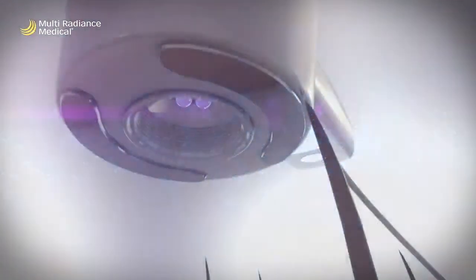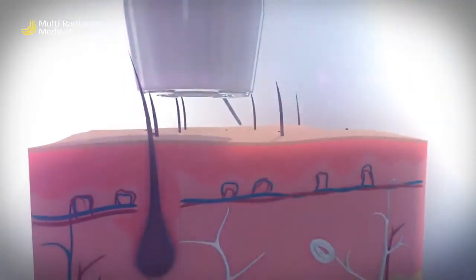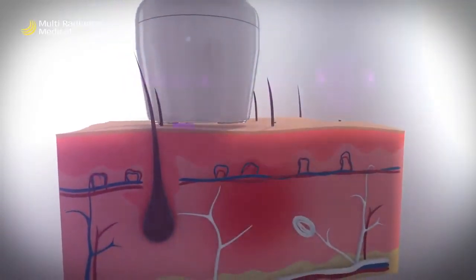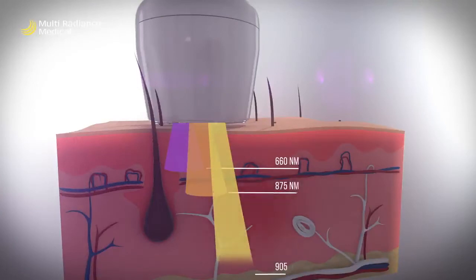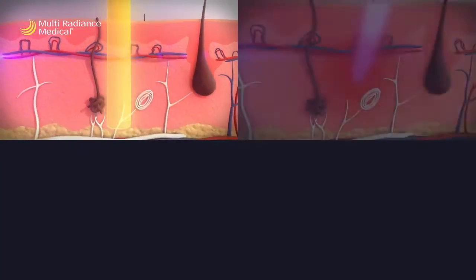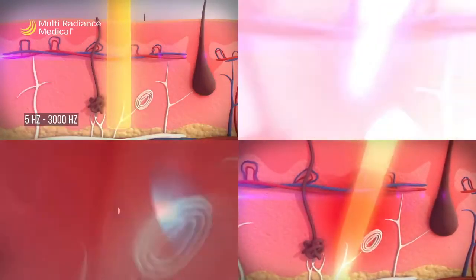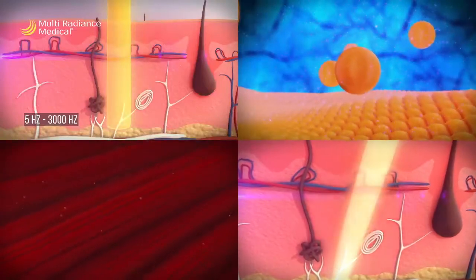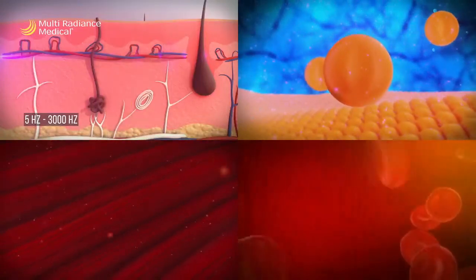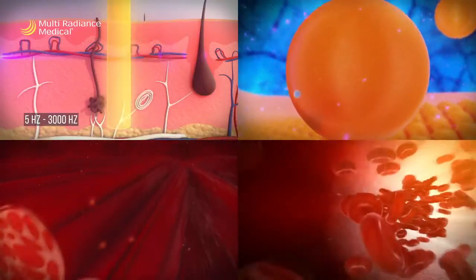Another important factor of Multi Radiance technology is controlling the depth of penetration, accomplished by varying the frequency at which light energy is being delivered. The higher frequencies penetrate relatively shallow tissue and have an inhibiting effect on pain, where lower frequencies enable deeper tissue penetration and create a stimulatory effect on the tissue.